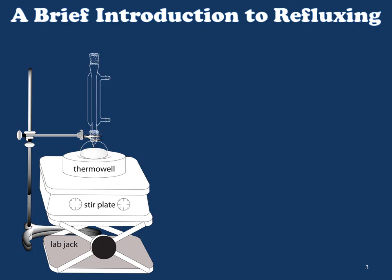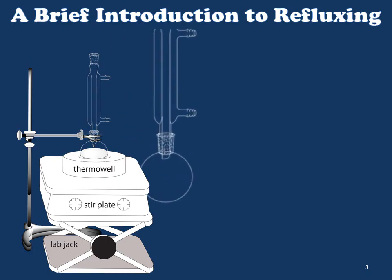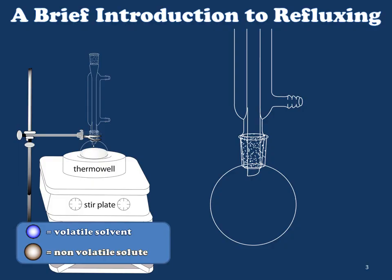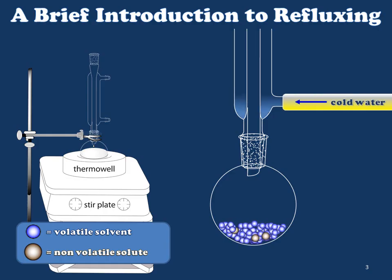Now that we've reviewed the apparatus, let's take a look at what's going on inside the actual boiling flask and reflux condenser. Just as before, we're going to charge our flask with a volatile solvent and a non-volatile solute. We're going to use the reflux condenser as a region of cooling, which will allow our sample to recondense and fall back into the boiling flask. To do this, we attach a water hose and turn on cold water flowing through the outer jacket.